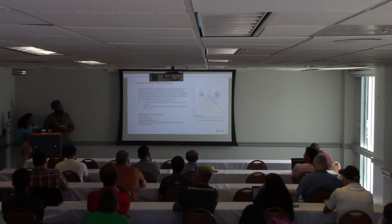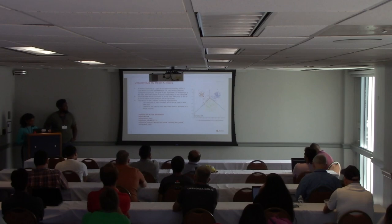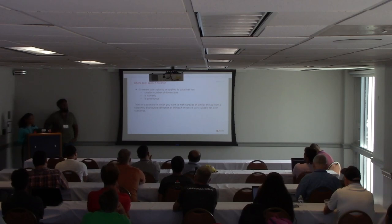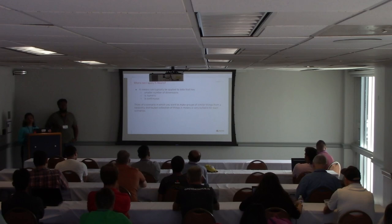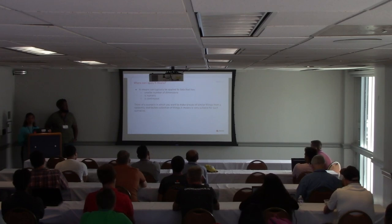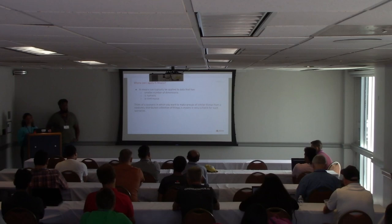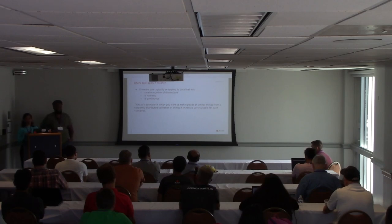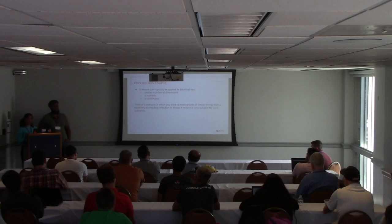K-means is typically useful when your data is numeric in nature, preferably with a small number of dimensions — though dimensionality reduction can address higher-dimensional cases. It works best when the data has a continuous nature. That makes k-means a suitable use case for grouping similar things together. How many of you think you've used k-means somewhere, or have an idea of where it might be used, or have used something that uses the k-means algorithm internally?